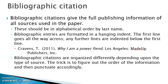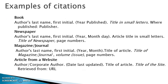Moving on to bibliographic citations — these give all the information any reader would need to go find your original source. They are organized alphabetically by last name, formatted in a hanging indent, which means the first line goes all the way across but subsequent lines are indented. Bibliographic citations are organized differently depending on the type of source, so use your rules for writers to make sure you are punctuating it correctly. In each example, the author's last name is first, comma, then the first initial — APA does not care about the author's first name, just the first initial. The year published is always second, in parentheses.